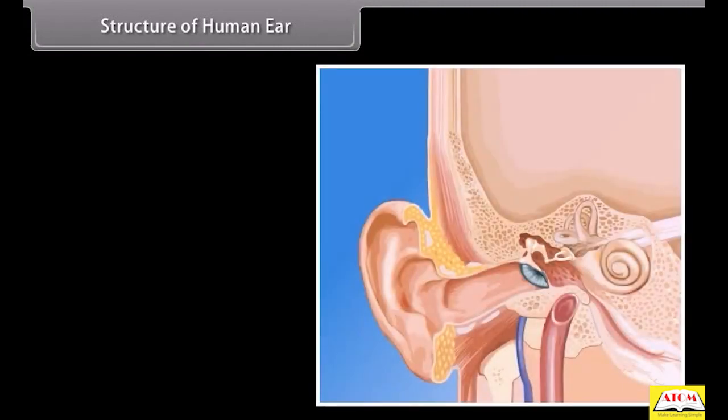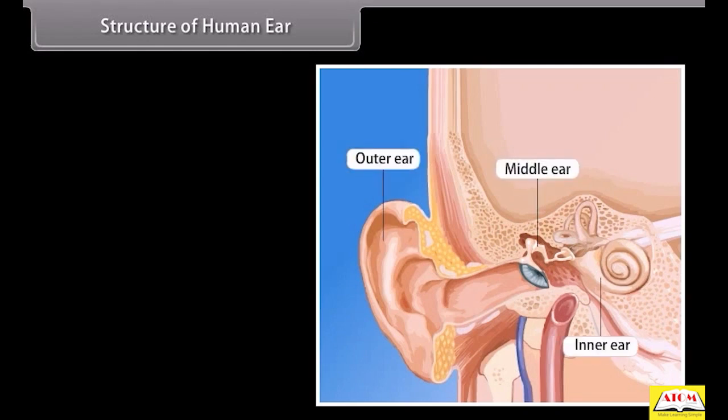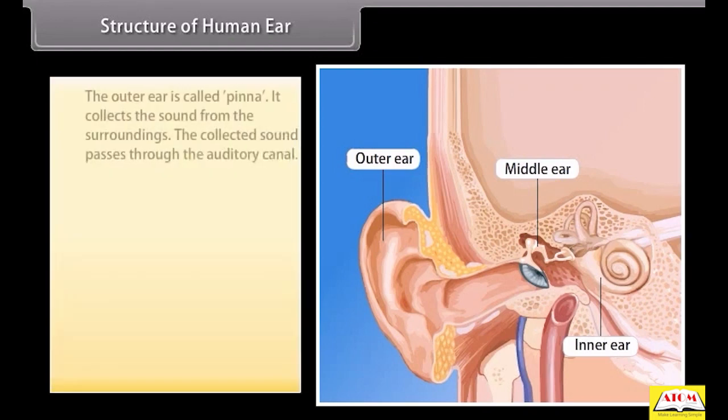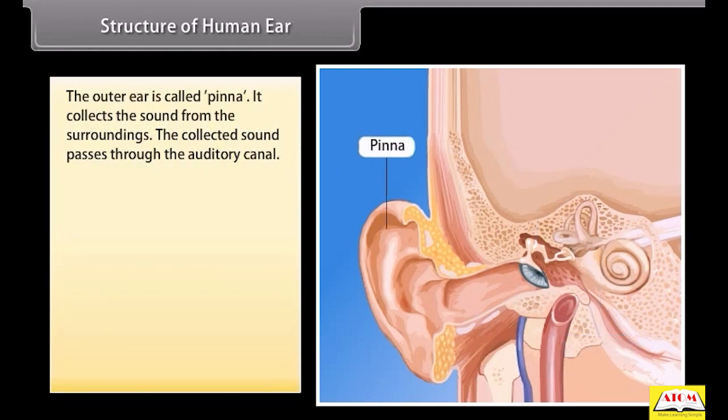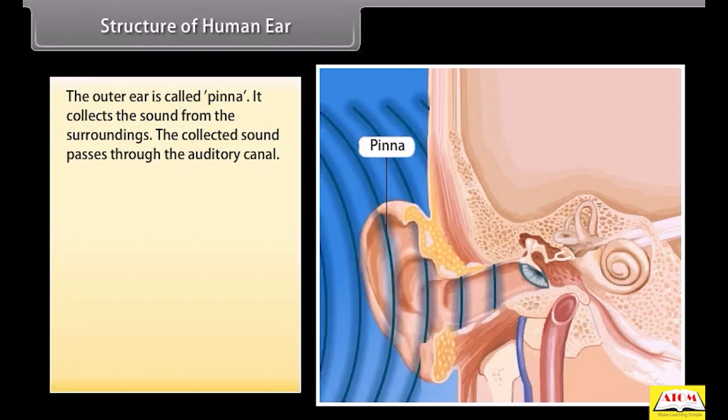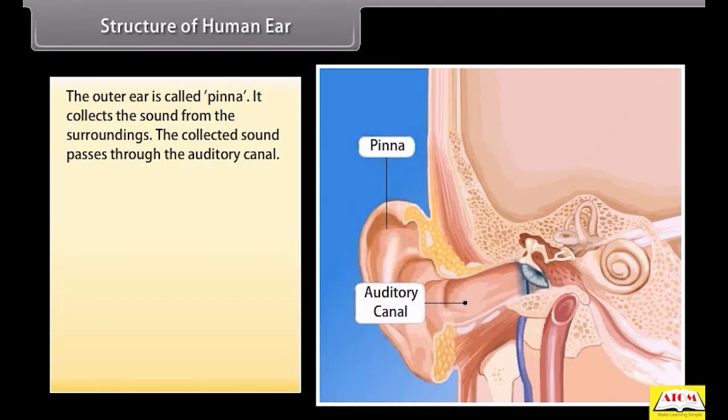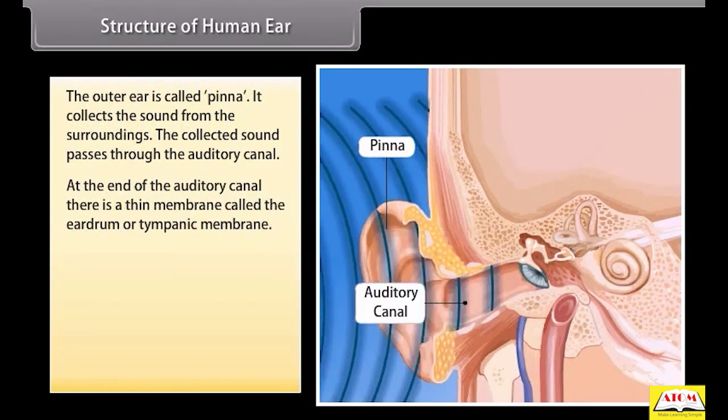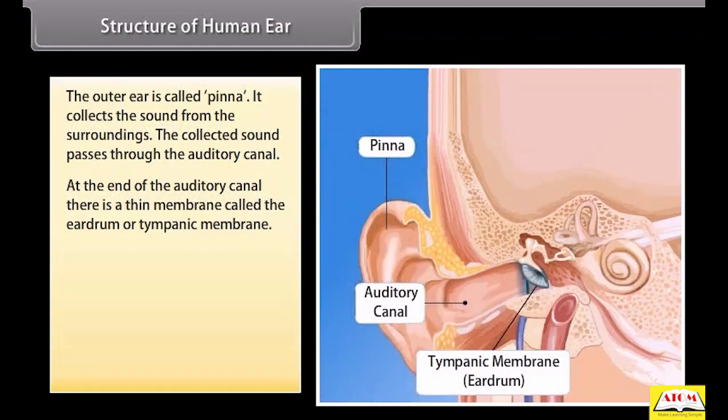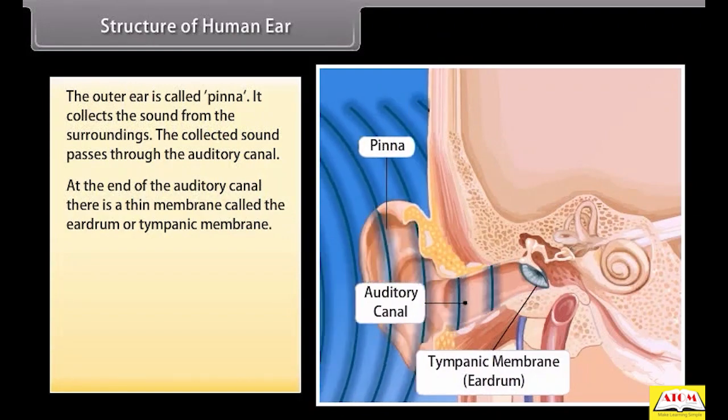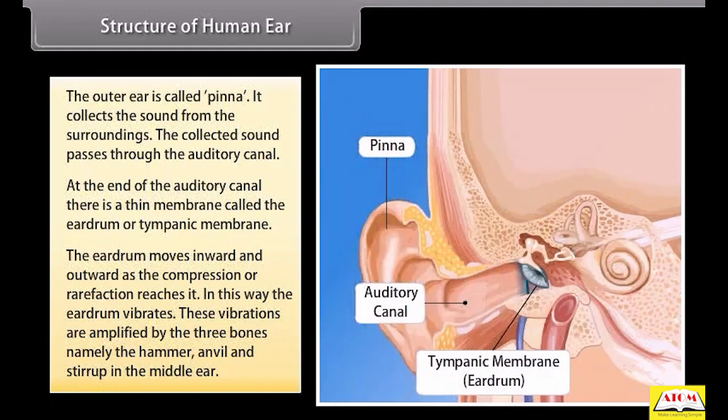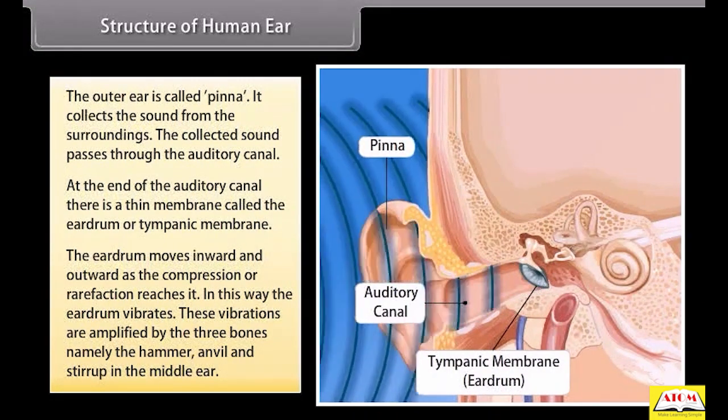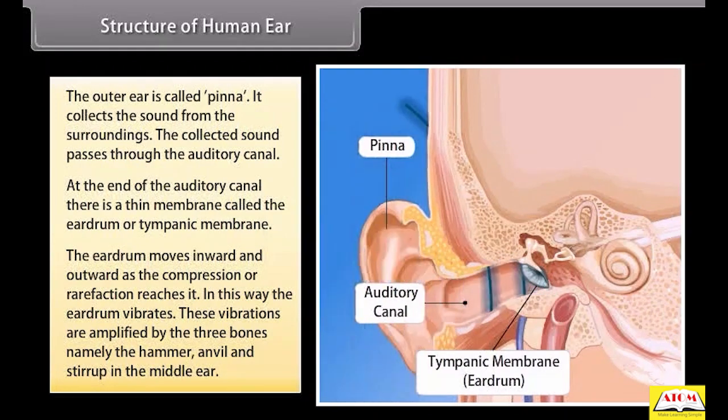Structure of the human ear. The ear consists of three basic parts: the outer ear, the middle ear, and the inner ear. Each part of the ear has a specific role in the task of detecting and interpreting sound. The outer ear is called pinna. It collects the sound from the surroundings. The collected sound passes through the auditory canal. At the end of the auditory canal there is a thin membrane called the eardrum or tympanic membrane. The eardrum moves inward and outward as the compression or rarefaction reaches it. In this way, the eardrum vibrates.